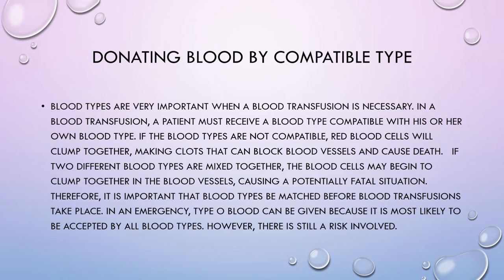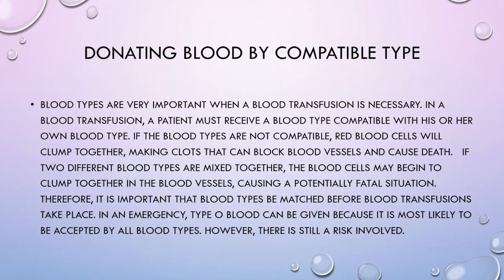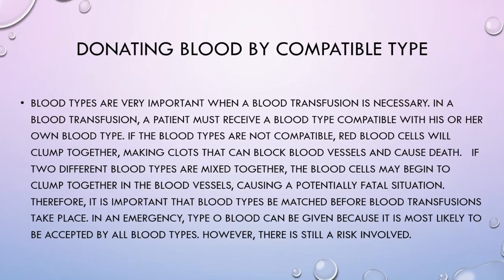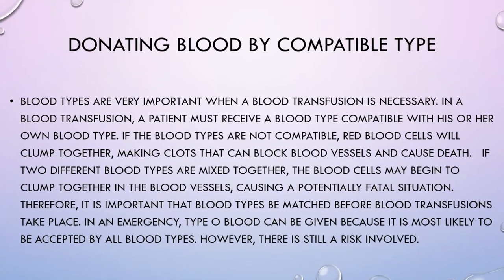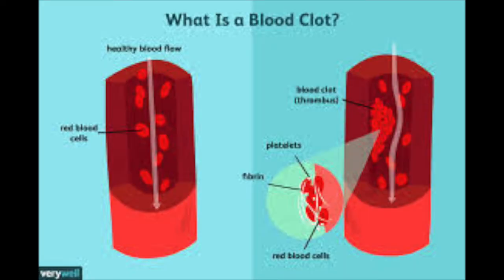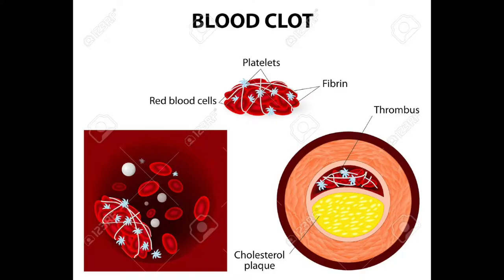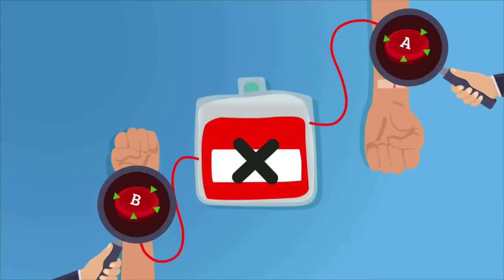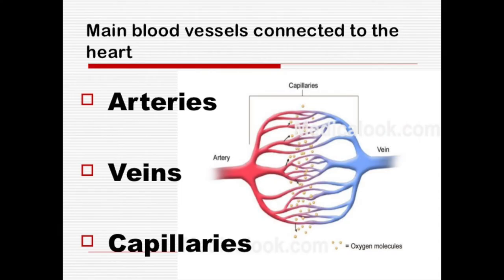Blood types are very important when a blood transfusion is necessary. In a blood transfusion, a patient must receive a blood type compatible with his or her own blood type. If the blood types are not compatible, red blood cells will clump together, making clots that can block blood vessels and cause death. If two different blood types are mixed together, the blood cells may begin to clump together in the blood vessels, causing a potentially fatal situation. Therefore, it is important that blood types be matched before blood transfusions take place.